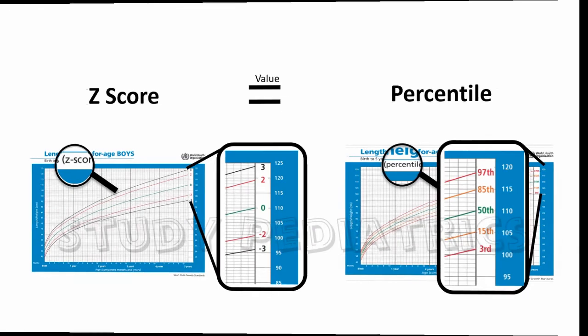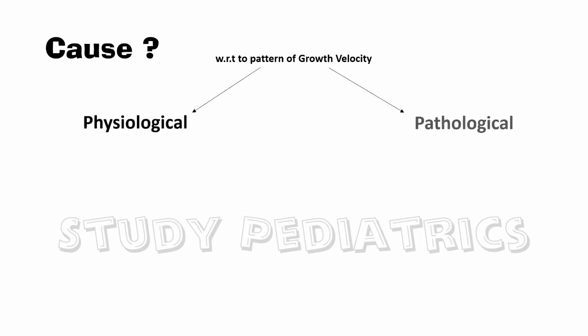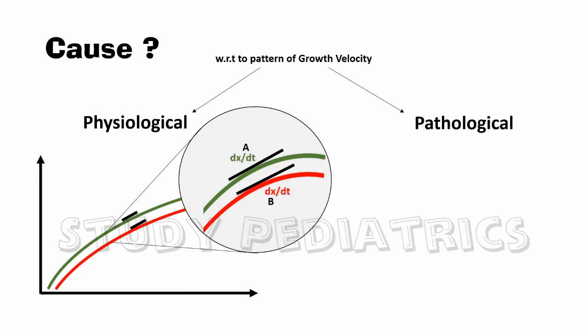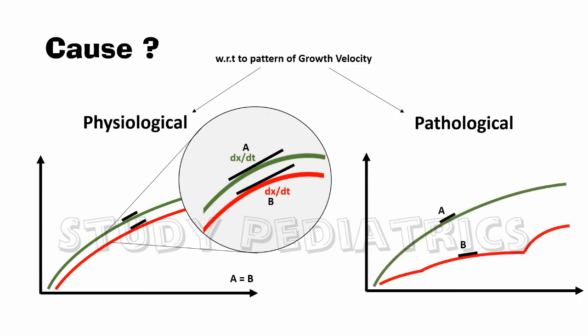Now let's see the causes of short stature. With respect to growth velocity, we can divide the causes into two: physiological and pathological. Growth velocity literally means the change in height per unit time. In physiological short stature, this change in height per unit time is the same as normal growth, so we consider the growth velocity as constant. In pathological short stature, since there is no normal pattern of growth, the growth velocity is very different from normal.